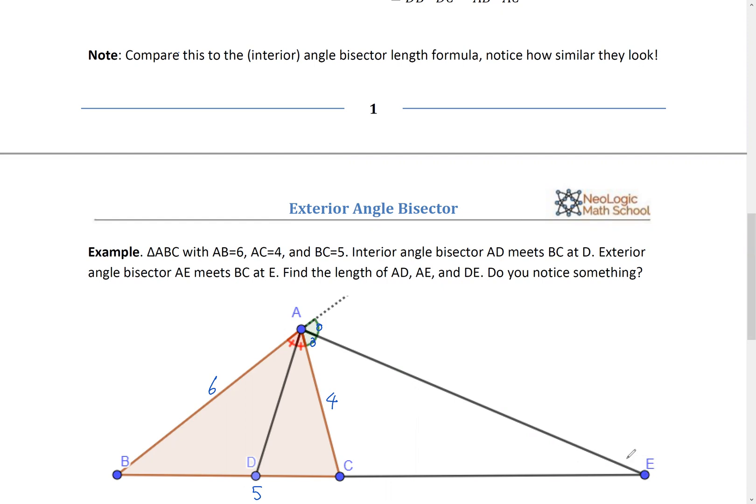All right. So that's one thing at a time. So BD over DC is the same as AB over AC, right? Which is three over two. So this must be three. This must be two because they add up to five. Right. And they have a ratio of six over four, which is three over two. All right. So this is three and two.